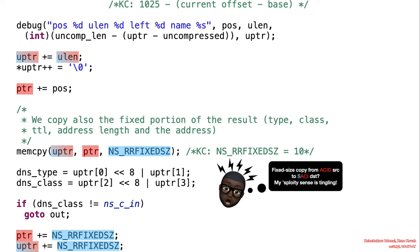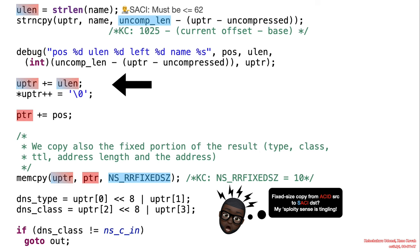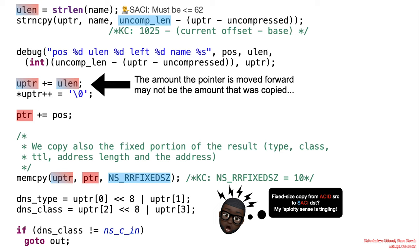Right, your sploidy sense should be thinking, right? What if the amount the pointer is moved forward is not the amount that was copied? Interesting. How can this be? Well, let's look at this calculation again. The calculation attempts to find out how much space is left in the buffer. So if there is, quote, little space left in the buffer, then what is essentially going to happen is that little amount of data will be copied from name. But then the pointer would be advanced an incorrect amount of times.